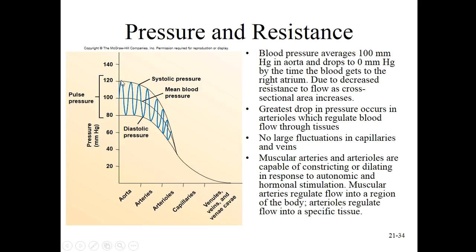The textbook value of 120 over 80: the top number represents the highest pressure as blood is ejected from the left ventricle. Between cardiac cycles, during ventricular diastole, the blood pressure drops but never reaches zero. At the bottom of the trough, the next cardiac cycle arrives, pushing pressure back up. That bottom value represents ventricular relaxation — diastole — giving us the diastolic pressure in 120 over 80.